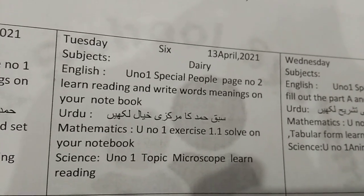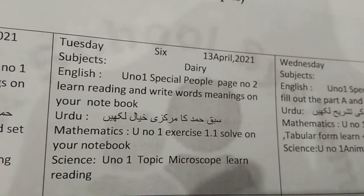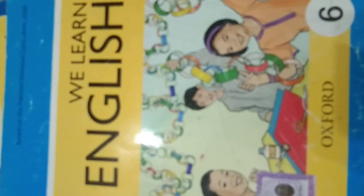Assalamualaikum students, this is your diary of classics, 13 April 2021. This is your English book. As you know, previously we learned about unit number one, special paper, page number one, and you have written down their meanings in your notebook. Now your task is to read page number two — the reading section — and write down their meanings in your notebook.